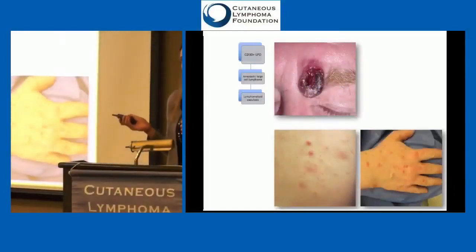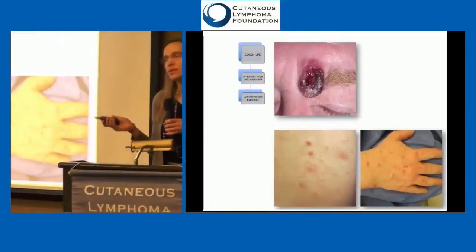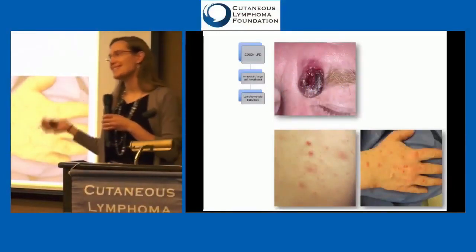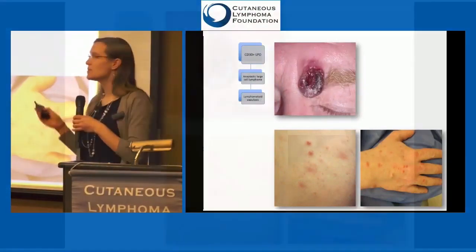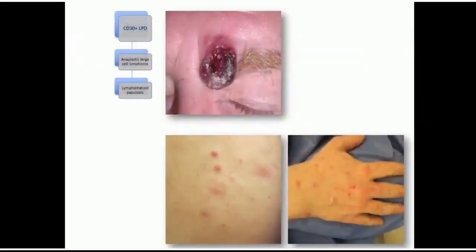Lymphomatoid papulosis and anaplastic large cell lymphoma fall into the CD30-positive bucket. Anaplastic large cell lymphoma oftentimes presents just as a tumor, and it's important to ask the history and do a whole skin exam to determine if there's anything elsewhere — patches like mycosis fungoides — or if the patient just presented with that one lesion.